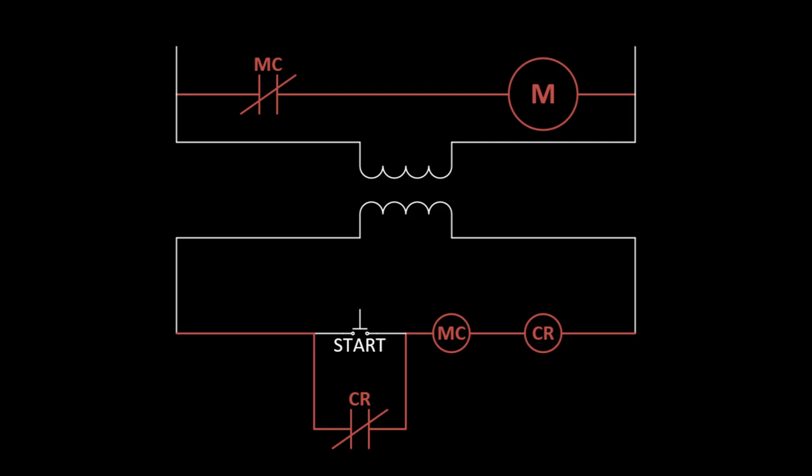The addition of the Control Relay contact adds a wire to the control side of the circuit, which is why this scheme is known as a three-wire control circuit.